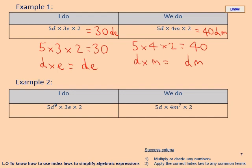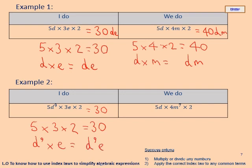For example two, this says 5d to the power nine times 3e times 2. Again, multiply or divide any numbers first: 5 times 3 times 2 — five times three gives 15, times two gives 30. Then apply the correct index law to any common terms: we have d to the power 9 and e, which are uncommon, so d to the power 9 times e written as d to the power 9 e. Final answer: 30d to the power 9 e.